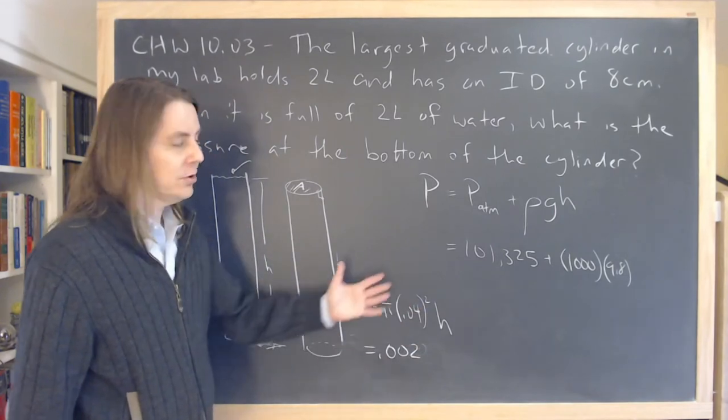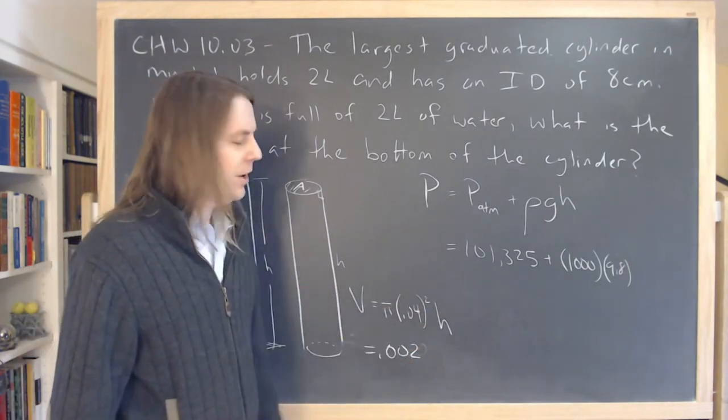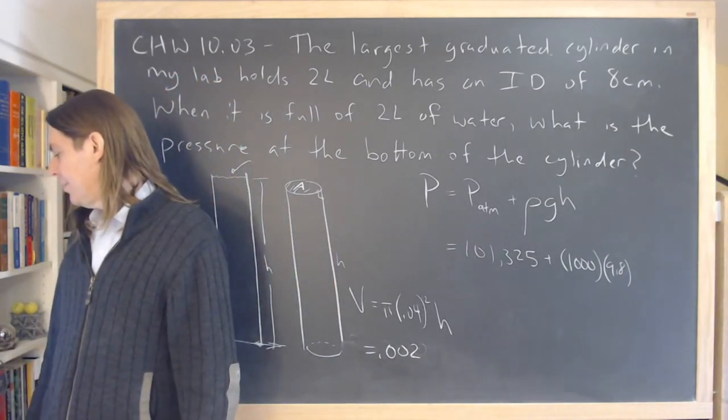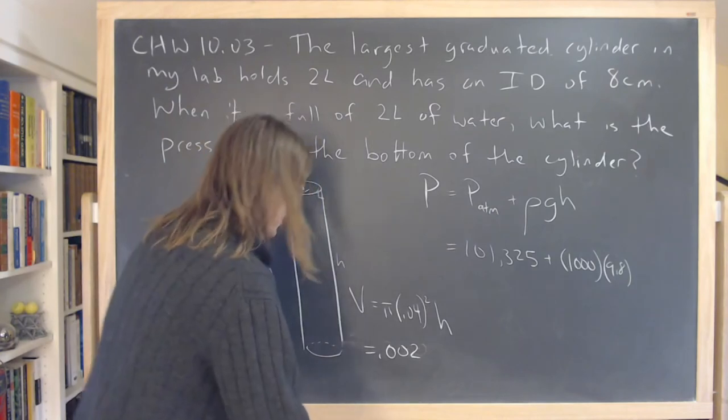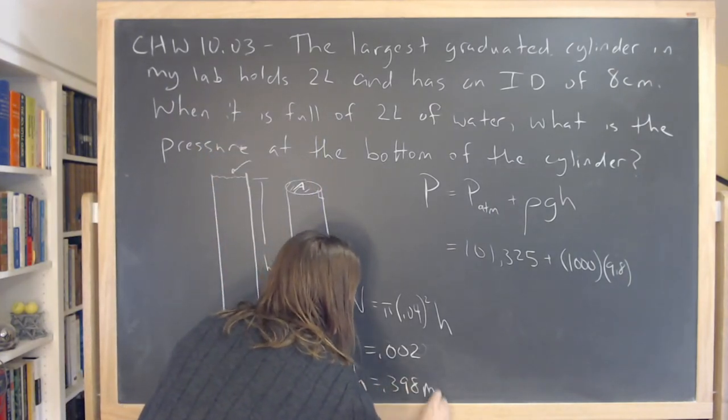Now this is all MKS worthy here. So if we say this equals that, solve for H, and I wrote it down here somewhere. So that is 0.398 meters. So H is 0.398 meters.